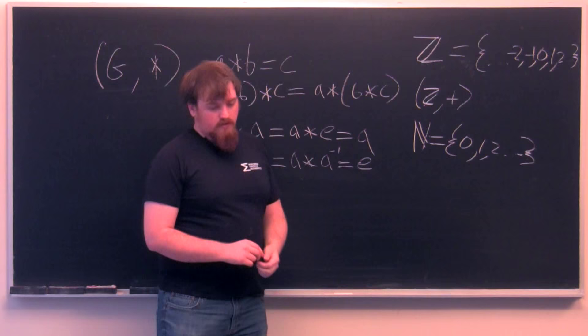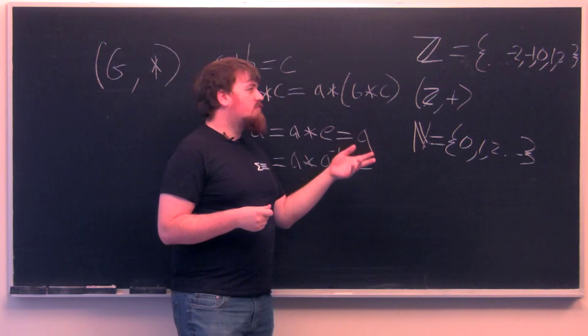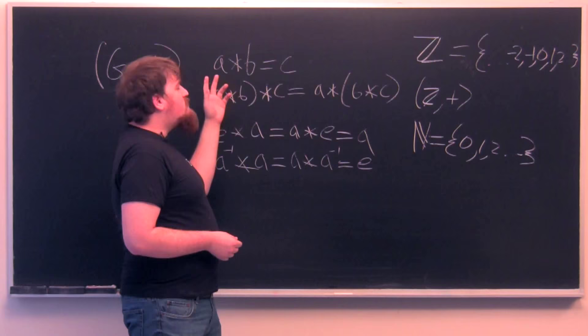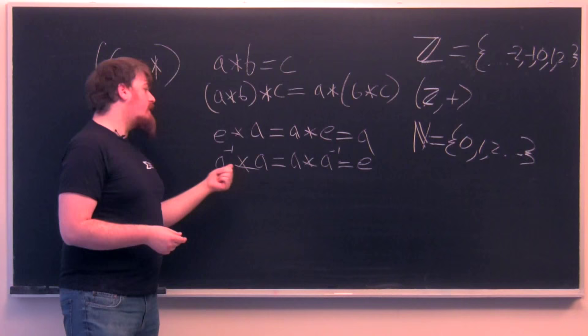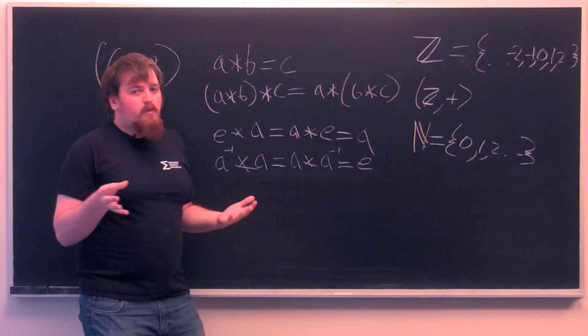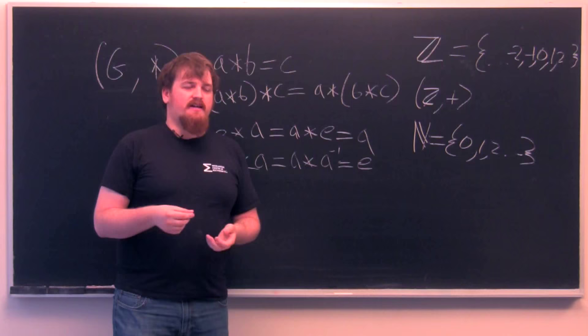So what about multiplication? Can we do Z in multiplication? Well, again, we have the same thing. Any two integers multiplied together are another integer. Multiplication is associative. One times any integer is the same integer. But there's no integer that you can multiply by two to get one, which is the identity. In order to get to somewhere where we can have multiplication be a group, we'll need to have things smaller than one, if we're talking about extensions of numbers.